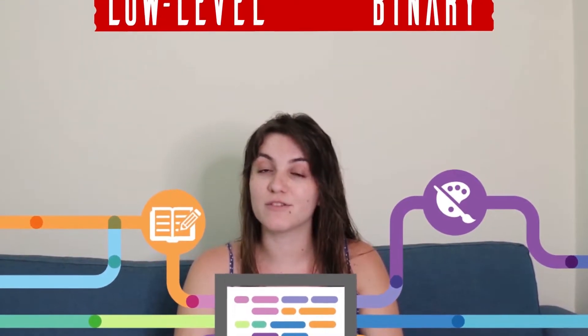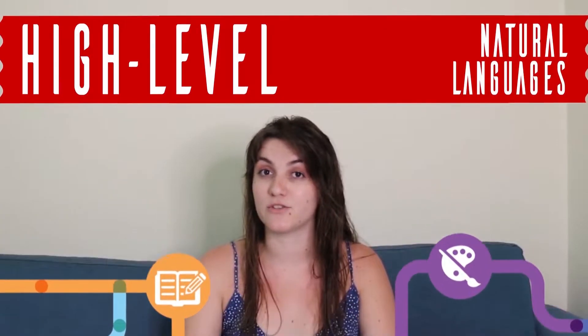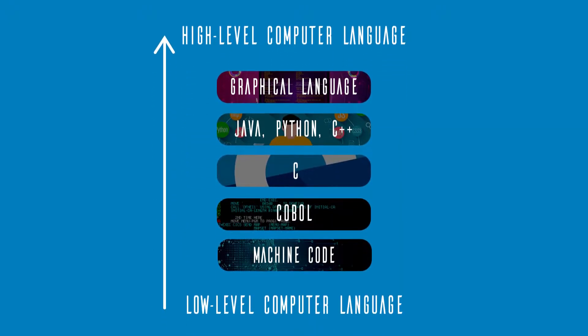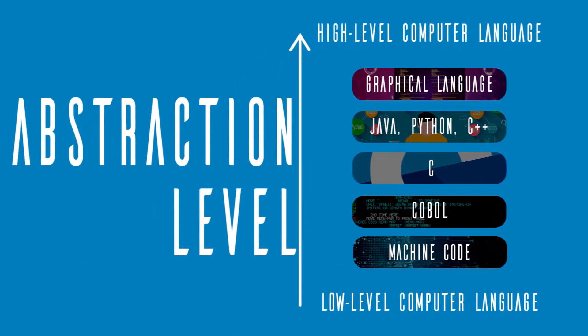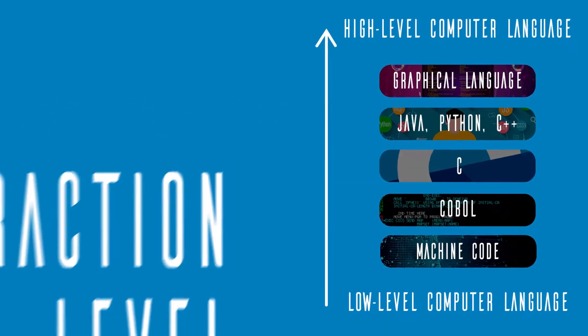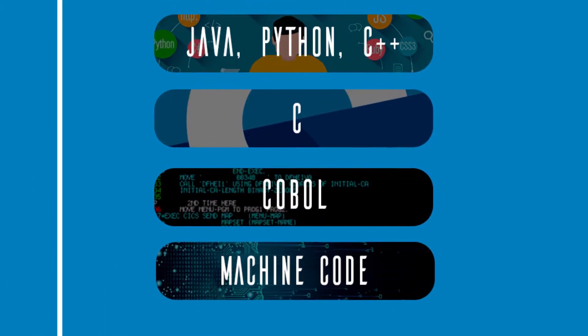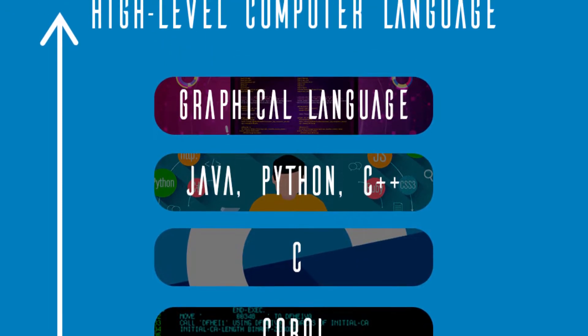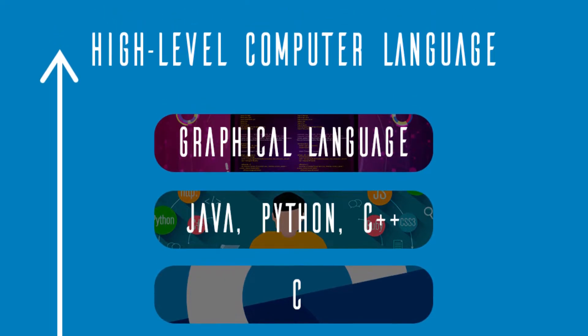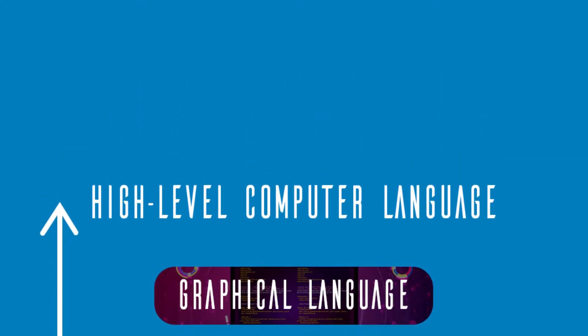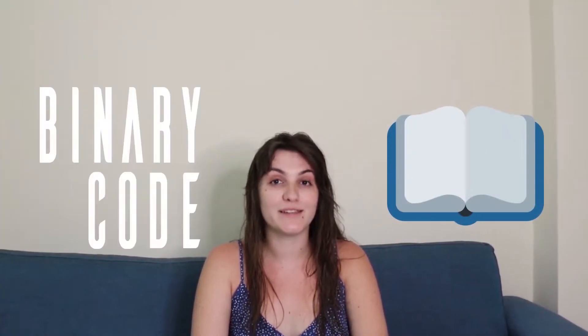We can order the languages according to their level, in which low-level is closer to binary, and high-level languages are closer to natural languages like English. In this representation here, we can see the abstraction level: at the low-level computer language we have machine code, then COBOL, then C, then Java, Python and C++. At the high-level computer language of abstraction, we can say that it's graphical language.